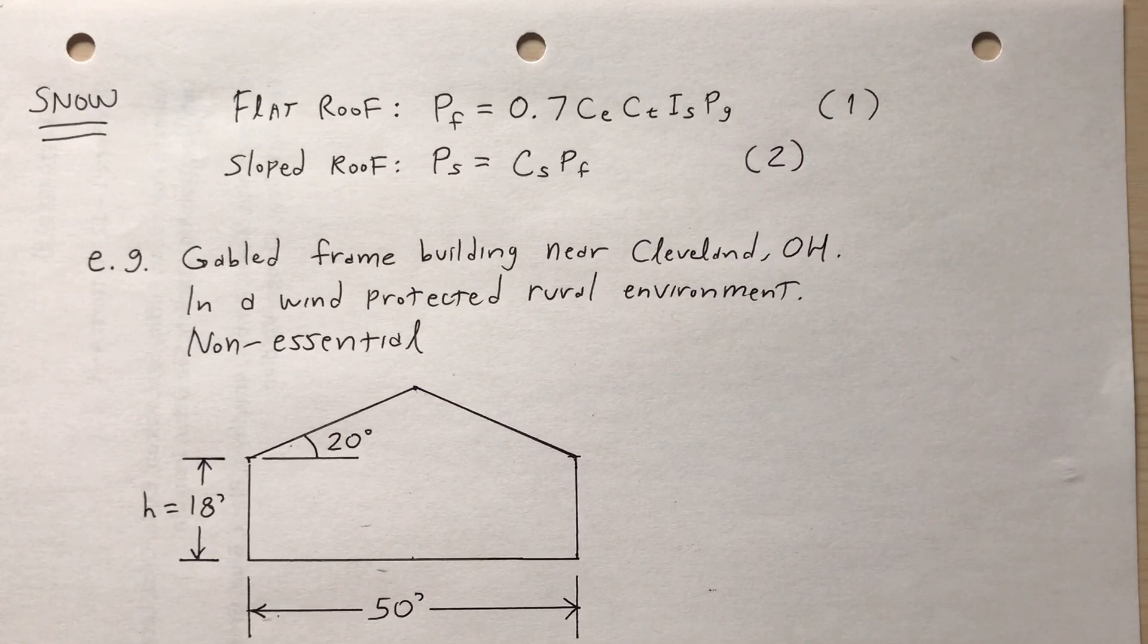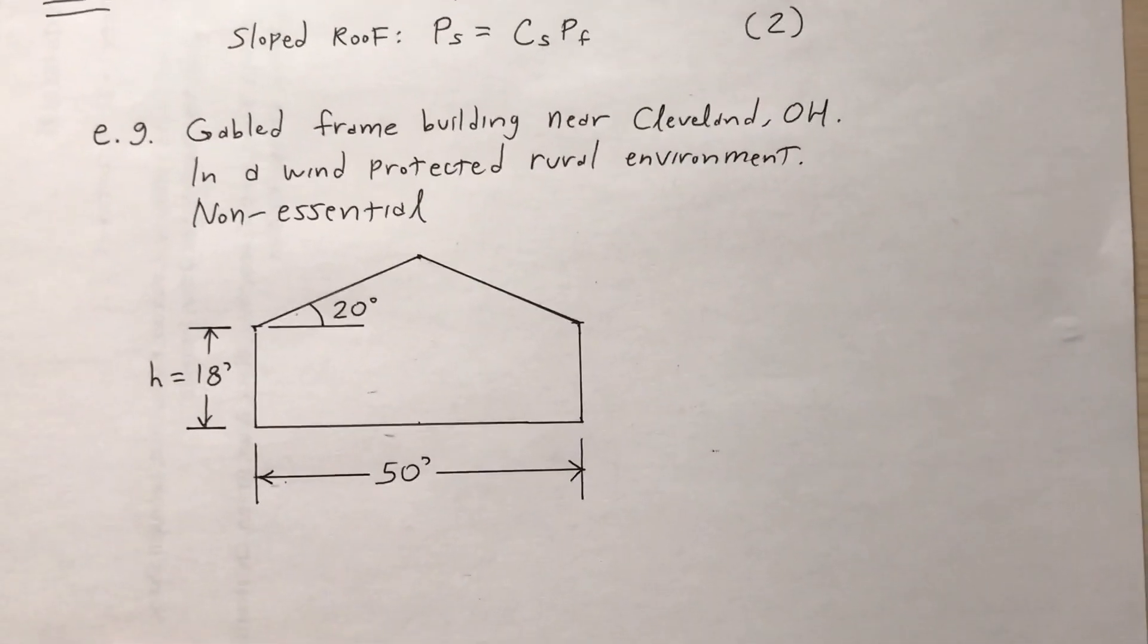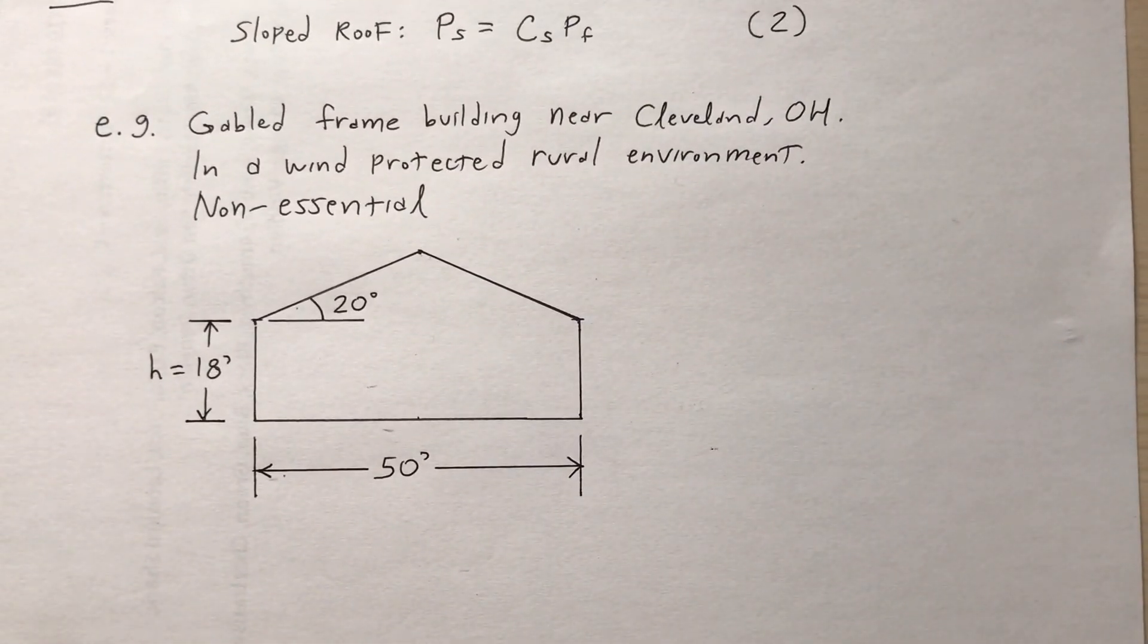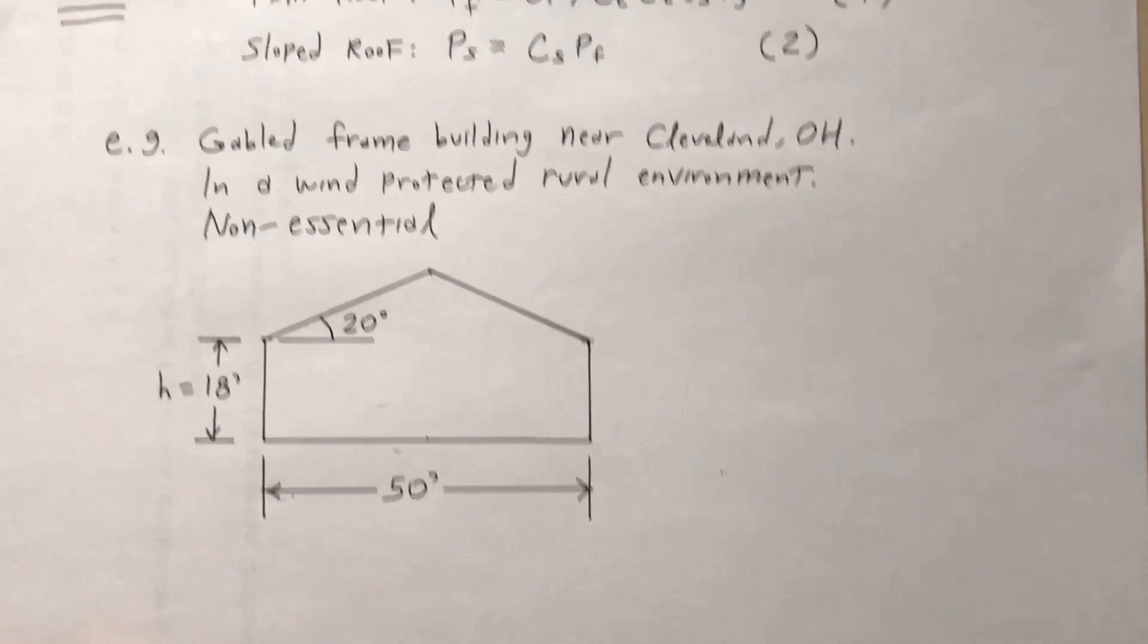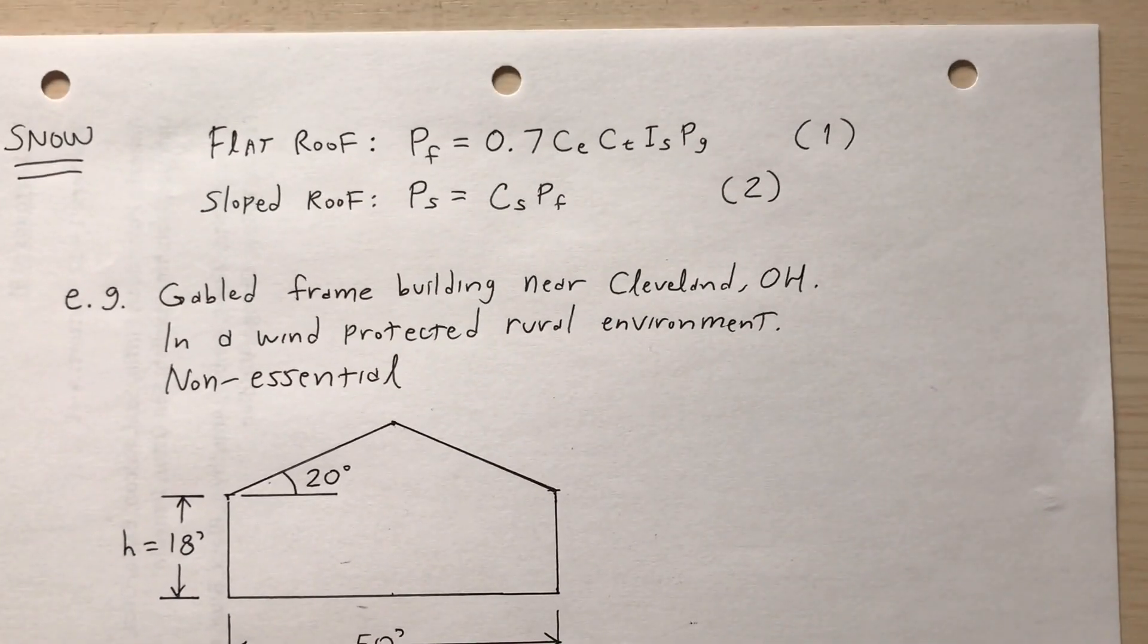Okay, so for example, a gabled frame building near Cleveland, Ohio, in a wind protected rural environment, and I'll consider that it's not essential. So here you have an elevation view of the building. So I have to find what all those different coefficients are, the c_e, c_t, etc., and then stick them into the formula.